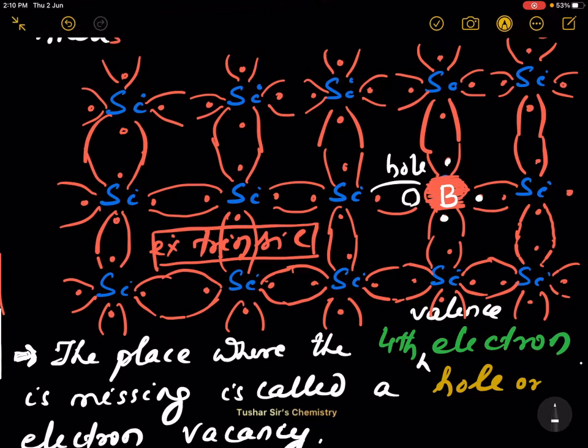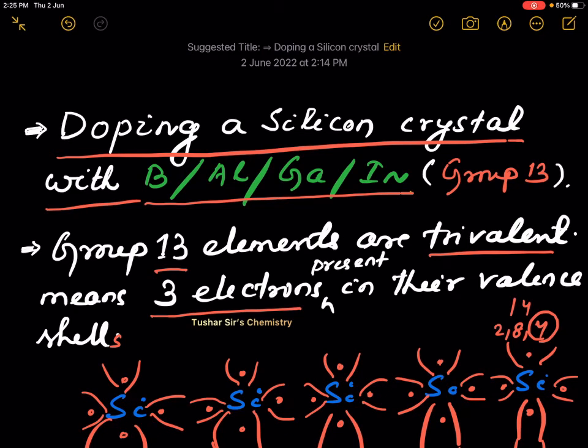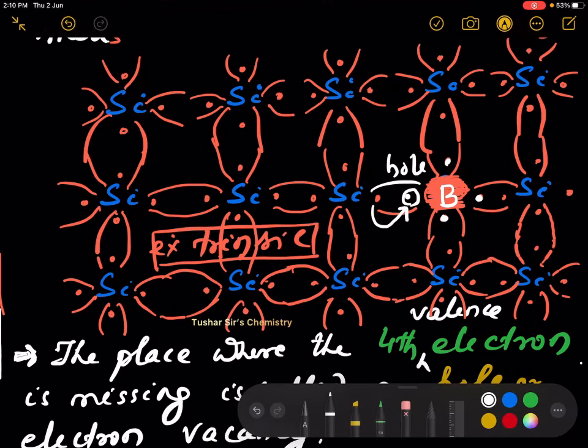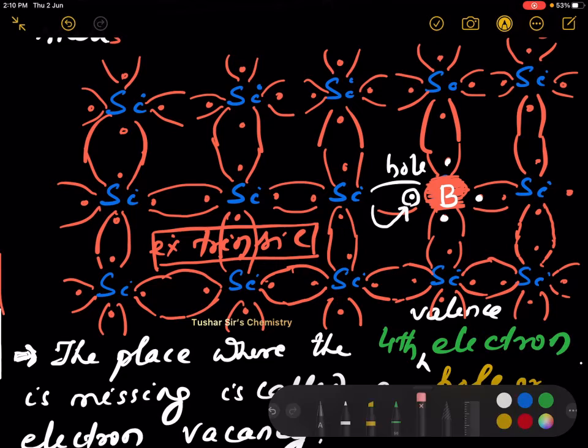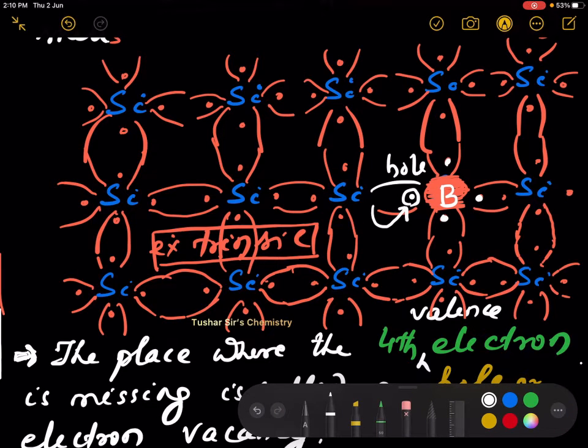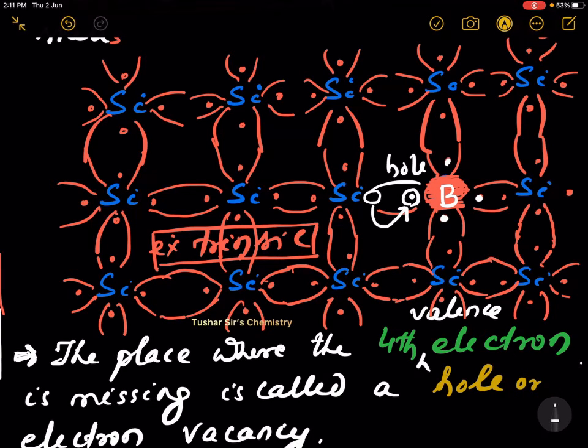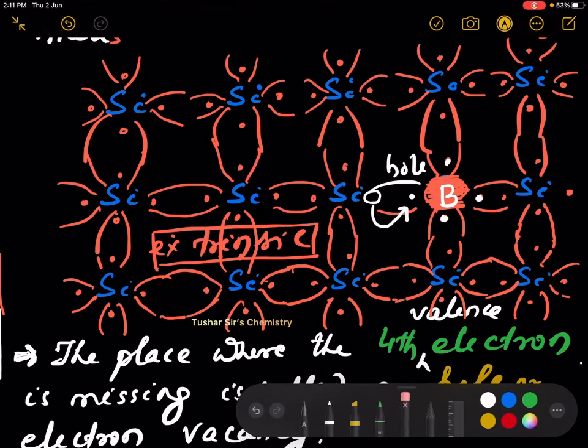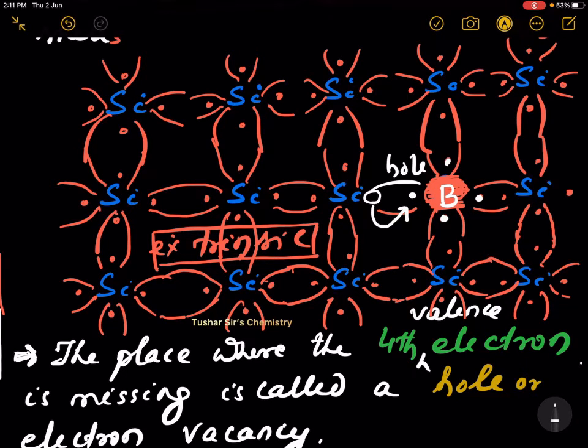When a hole is created in presence of electric field, the adjacent electron will try to occupy this hole. Then another hole will be created over here. And this hole is filled with that electron. To fill this hole, this electron will migrate to this position.